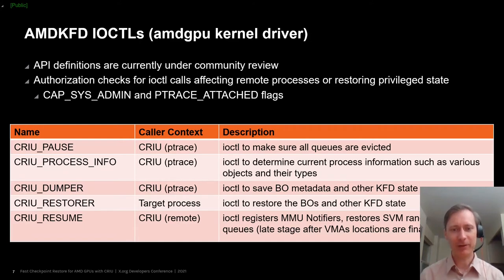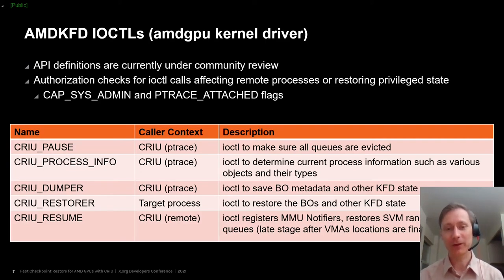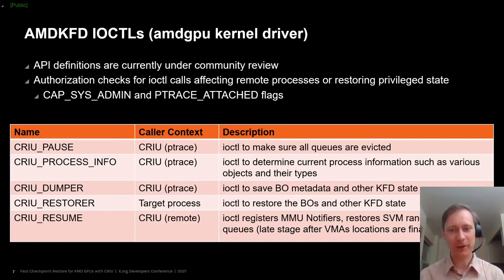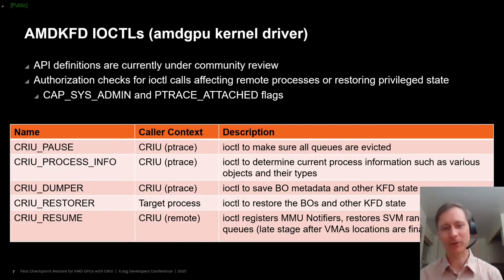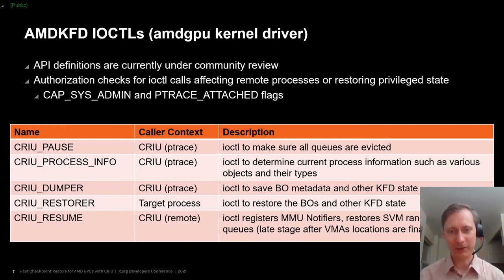The dumper IOCTL does the actual saving of state — at least one IOCTL call for each type of object that we support, like buffer objects or user mode queues. We can also break that into multiple calls to avoid running into file descriptor limitations, because each buffer object being saved comes with a DMABuf file descriptor for saving the memory contents. The restorer IOCTL is the reverse of the dumper IOCTL except it runs in a different context; it takes the same type of information but copies it back from user mode to kernel mode instead of saving it out. Finally, the resume IOCTL is the one that finalizes the restoring of MMU notifiers and SVM virtual address ranges, and resumes the execution of the GPU queues.